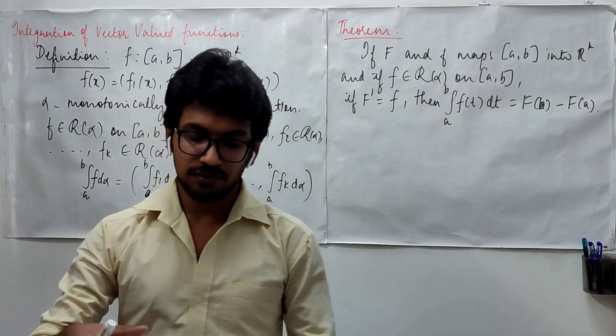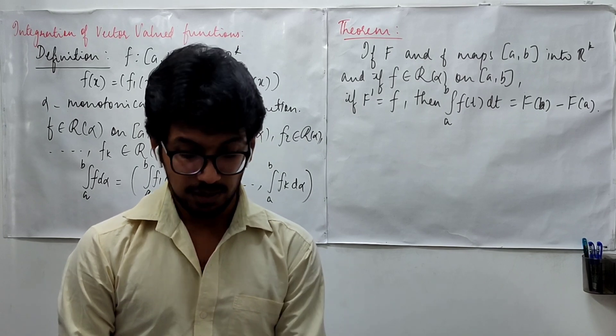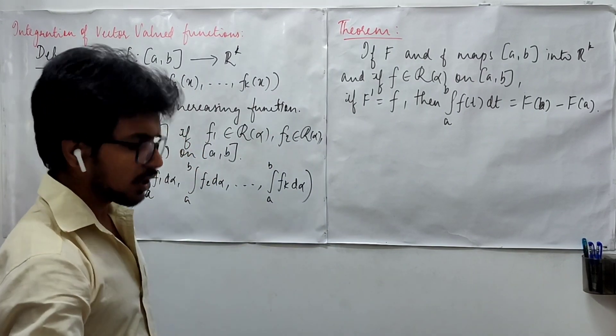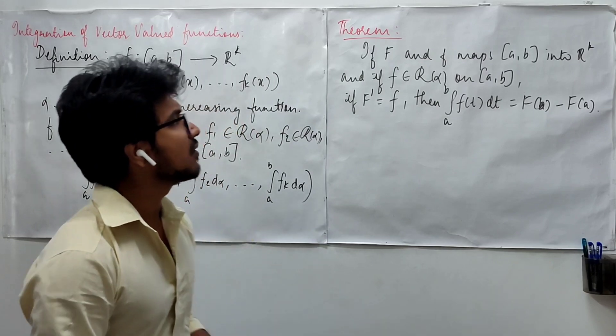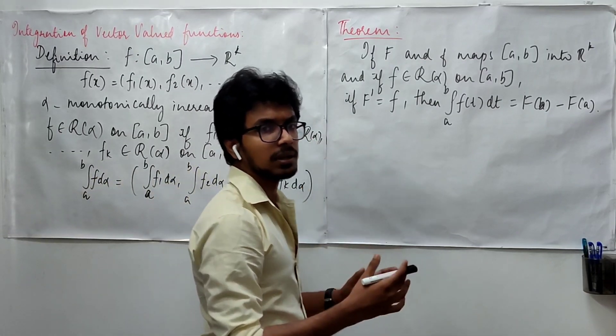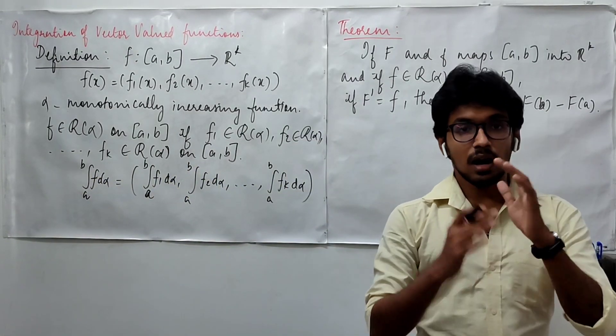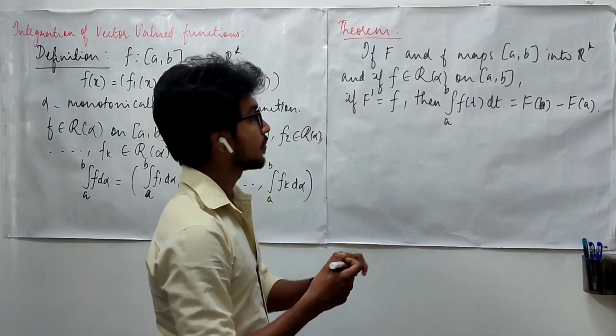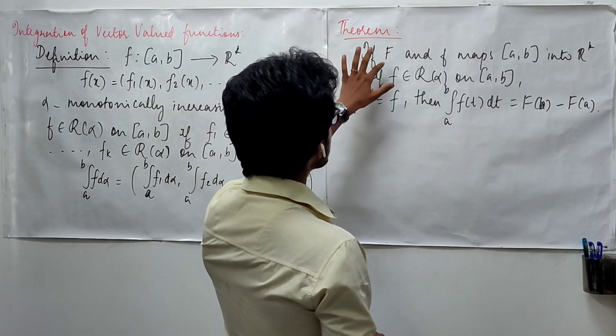So, this is the fundamental theorem of calculus for vector valued functions. Here, we are not actually going to prove it as I said, but we will see how these things happen. How can we validate this? Only that we are going to see.